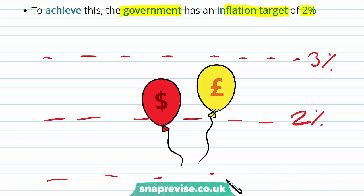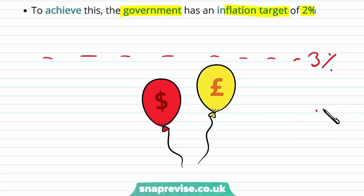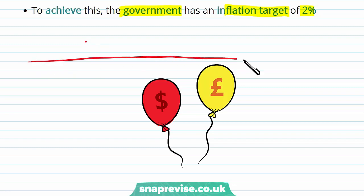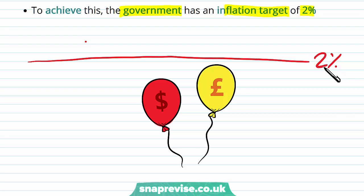Another example of an inflation target within a region is the EU. The EU has their inflation target set at below two percent — they want inflation close to, but not quite at, two percent, and they are accepting of anything below two percent. These are strict rules that the government or central bank applies to their inflation targets.